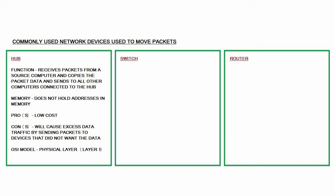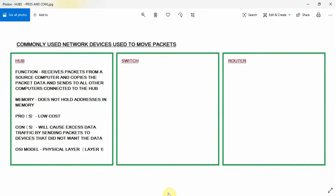The downside is it will cause an excess of data traffic, because it's sending packets to devices that didn't really want the data — but the data is being sent anyway. That's one of the main downfalls of the device. In terms of the OSI model, this device works on the physical layer — layer one. So let's go into Packet Tracer and take a look at how we can connect a hub.